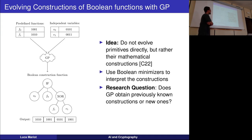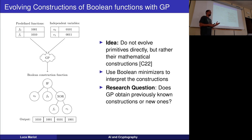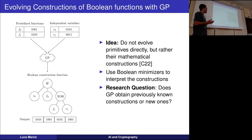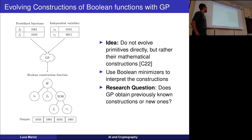Most works in the literature address the construction of boolean functions using a direct search approach, where we have a representation of a boolean function as a bitstream encoding its truth table, and we want to find the optimal bitstream corresponding to the best boolean function with respect to a subset of cryptographic properties. Instead, something more recent is to not evolve the primitive directly, but rather to evolve mathematical constructions of them. Genetic programming is well-suited for this, evolving a syntactic tree where inputs can be single bits or smaller seed functions.